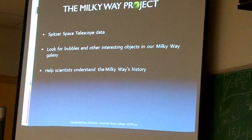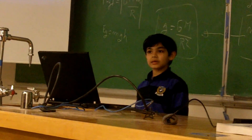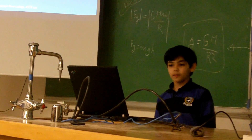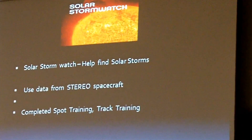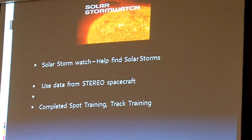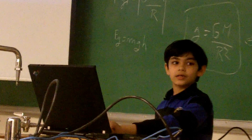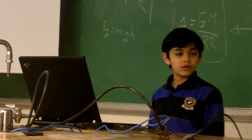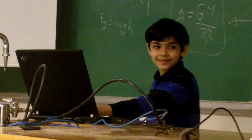The Milky Way Project is where we help scientists understand the history of the Milky Way galaxy. The images come from the Spitzer Space Telescope, and we look for bubbles and other interesting objects. Solar Stormwatch, as the name indicates, is where we help find solar storms using data from the STEREO spacecraft. I have completed spot training and track training to spot and track solar storms. Very recently, a few volunteers found a solar storm that passed the Earth — though it missed us.